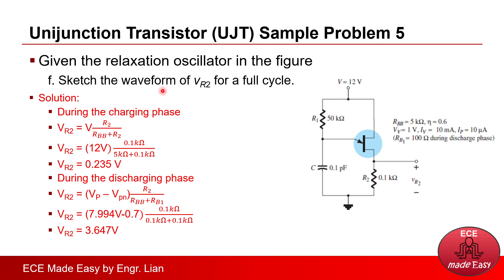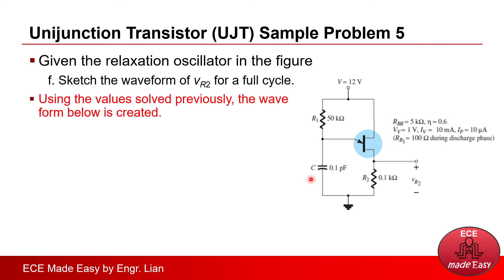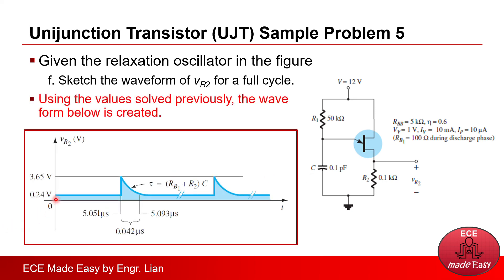The timing is the same as computed: 5.051 microseconds for charging and 0.042 microseconds for discharging. The waveform of Vr2 remains at 0.24 volts during charging, then spikes to 3.65 volts when the capacitor is fully charged and the UJT turns on, then gradually decreases as the capacitor discharges until the UJT turns off again. This is the equivalent waveform across Vr2 for one full cycle. Thank you.